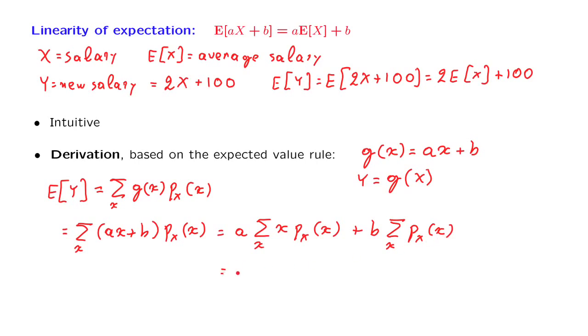Now, the first sum is a times the expected value of X. This is just the definition of the expected value. As for the second sum, we realize that this quantity is equal to 1, because it is the sum of the probabilities of all the different values of X. And this concludes the proof of the linearity of expected values.